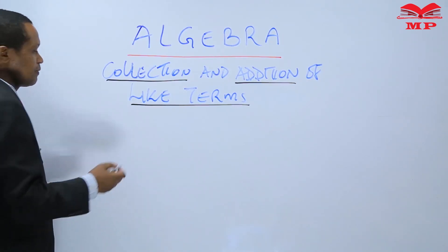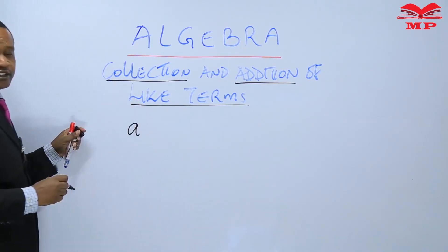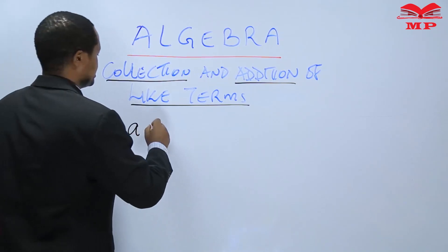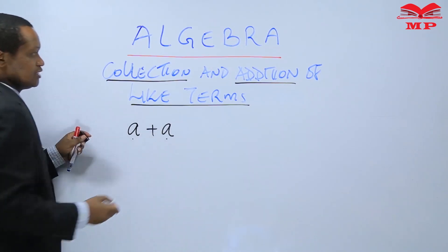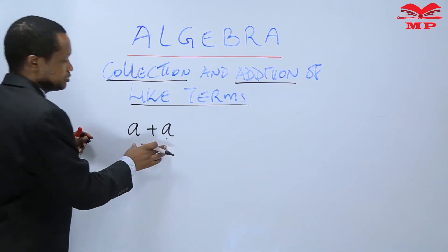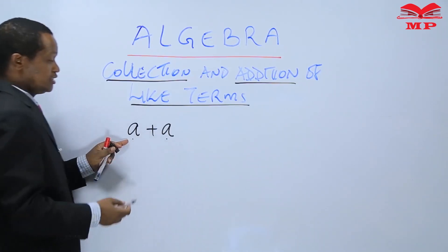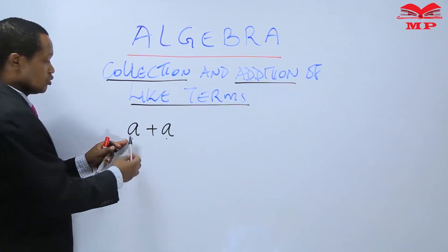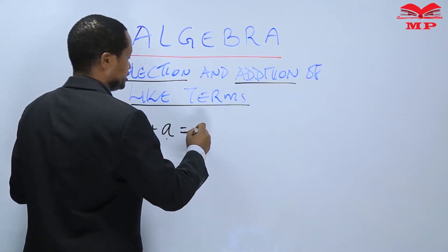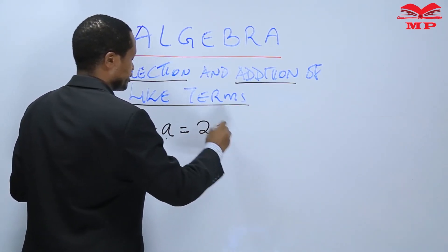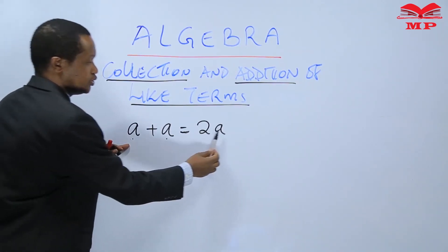For example, a term like A is a term. A plus A — these are two A's, one and two. So A plus A can be written as 2A.